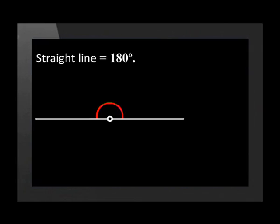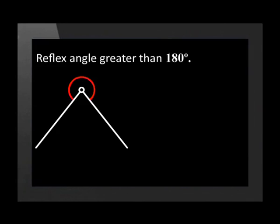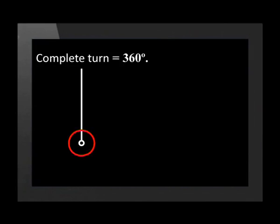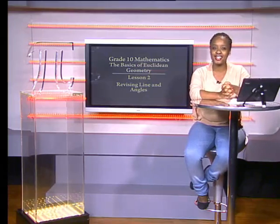A straight angle measures exactly 180 degrees and the two arms form a straight line. If an angle is bigger than 180 degrees, it is called a reflex angle. Lastly, a revolutionary angle measures exactly 360 degrees — we say it has done a full revolution. Most of those angles should have been revision of work you have covered in previous grades. Let's look at some more terminology associated with angles.